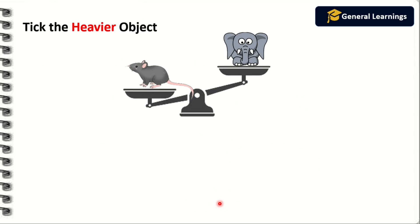Next they have told us to tick the heavier object. Here they have given an elephant and a rat. We are going to tick which is heavier — heavier means the weight of an object should be more. While comparing these two pictures, whose weight is more — rat or elephant? Yes, the elephant's weight will be more, so we are going to mark the elephant as the heavier object.